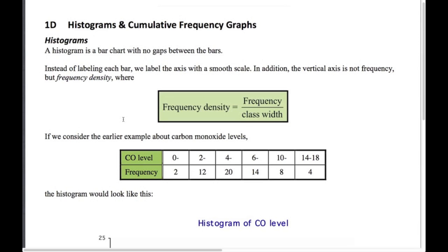A histogram is a bar chart with no gaps between the bars — the bars are touching. Really important: if you did IGCSE last year you'll know that when we draw histograms it is not frequency on the vertical axis, it is frequency density.